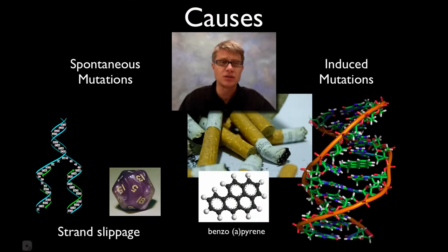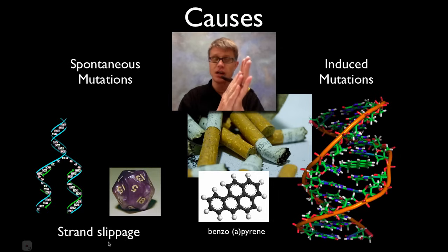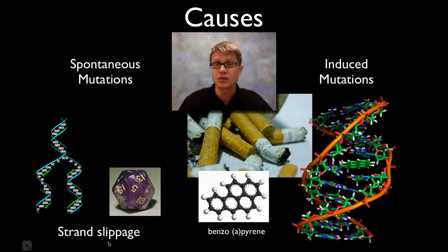What causes them? It's not a typo. Basically there are two ways that you can get mutations. The first are called spontaneous mutations. That's when something in the process of replicating the DNA or forming the gametes goes wrong. A common type is called strand slippage, where the two strands, the parent strand and the daughter strand, will slip past each other and then you get bonding that's not perfect.